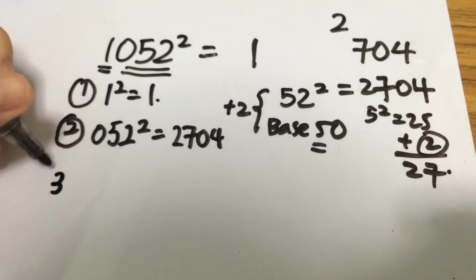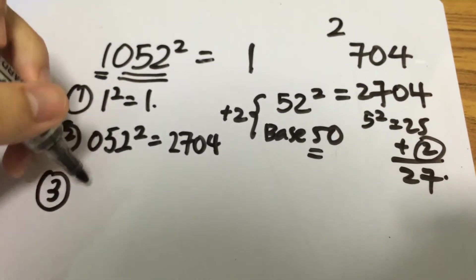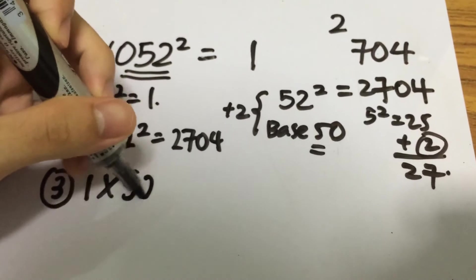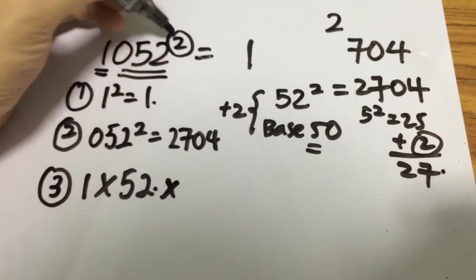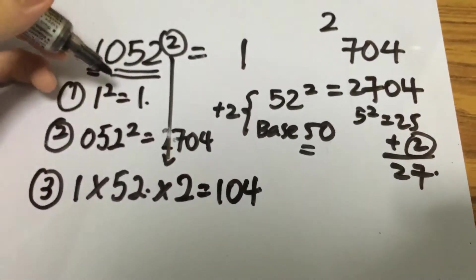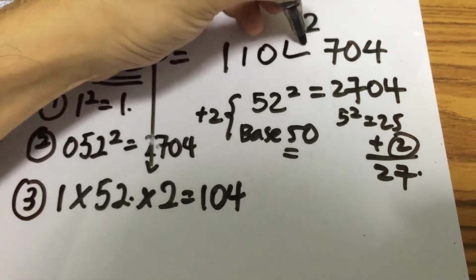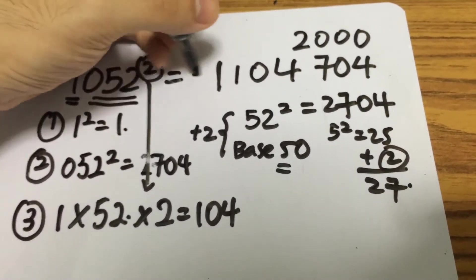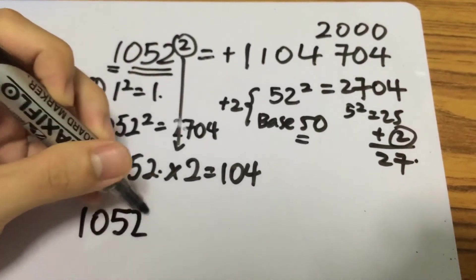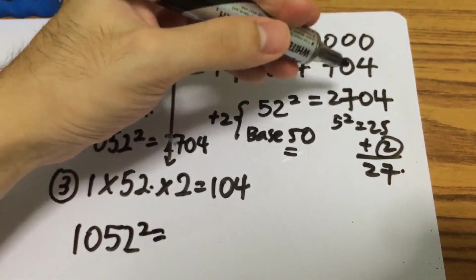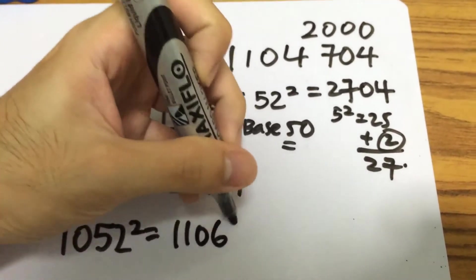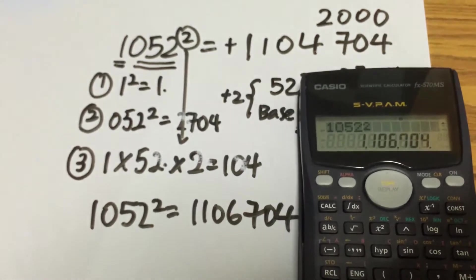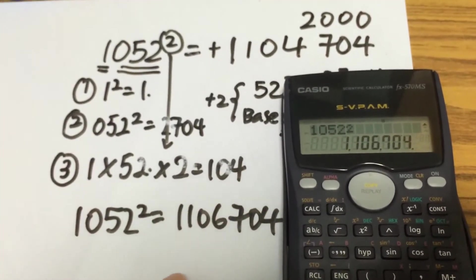Last but not least, we multiply the first digit of the value — which is 1 — times the last three digits, which is 52, times the power, which is 2. That gives 104. We fill that in accordingly and then sum everything up. So 1052 squared equals 1,104,704 plus 2,000, which gives us 1,106,704. Using the calculator, we confirm the answer is the same: 1052 squared equals 1,106,704.